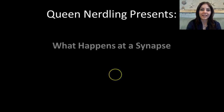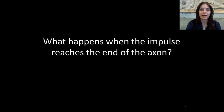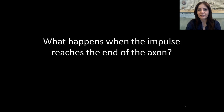Greetings, nerdlings. Today, we're going to be talking about what happens at a synapse. What happens when the impulse reaches the end of an axon? Where does it go, and how does it get conducted to the next axon, and eventually the brain?